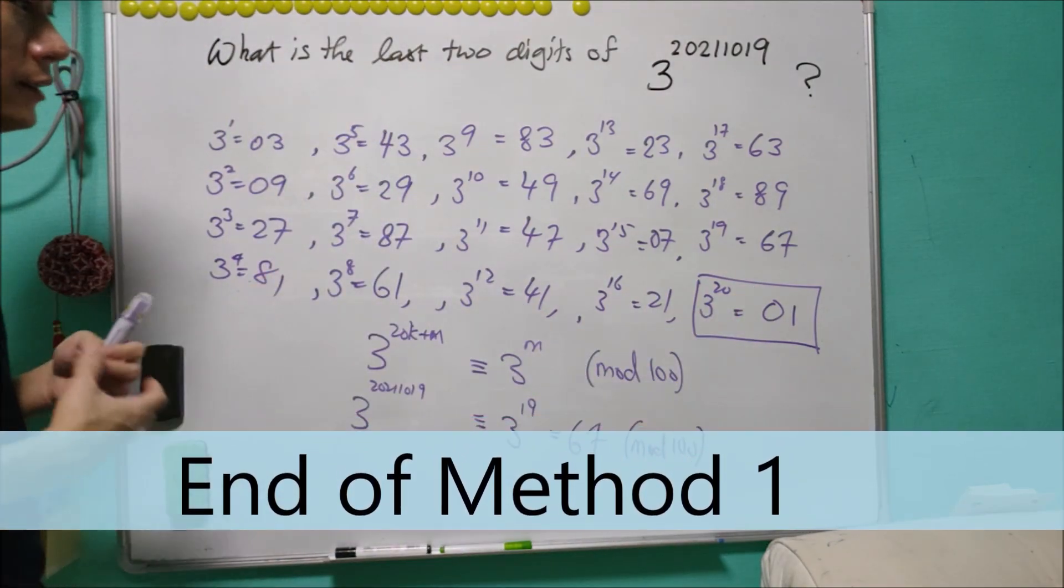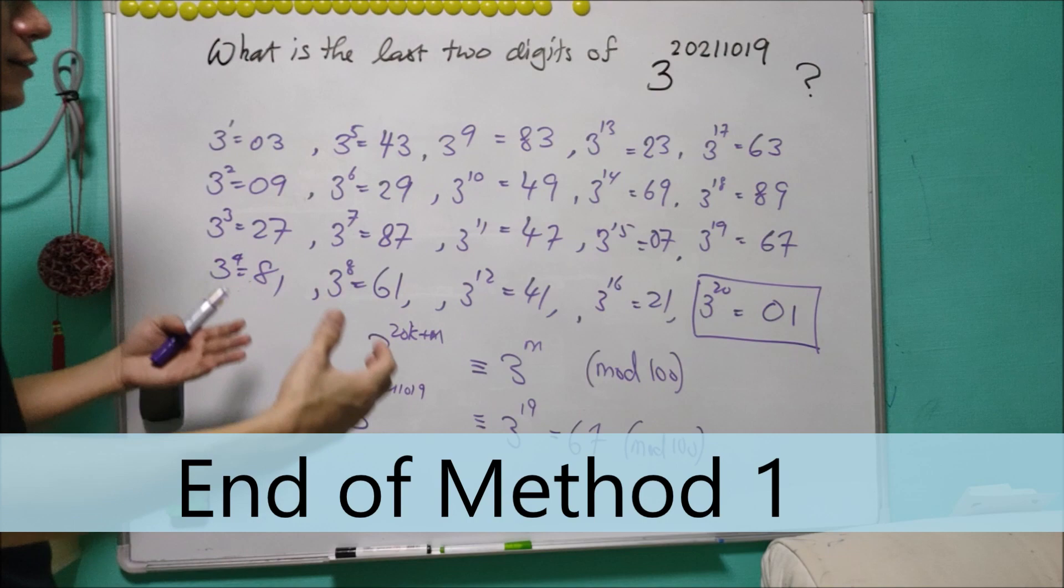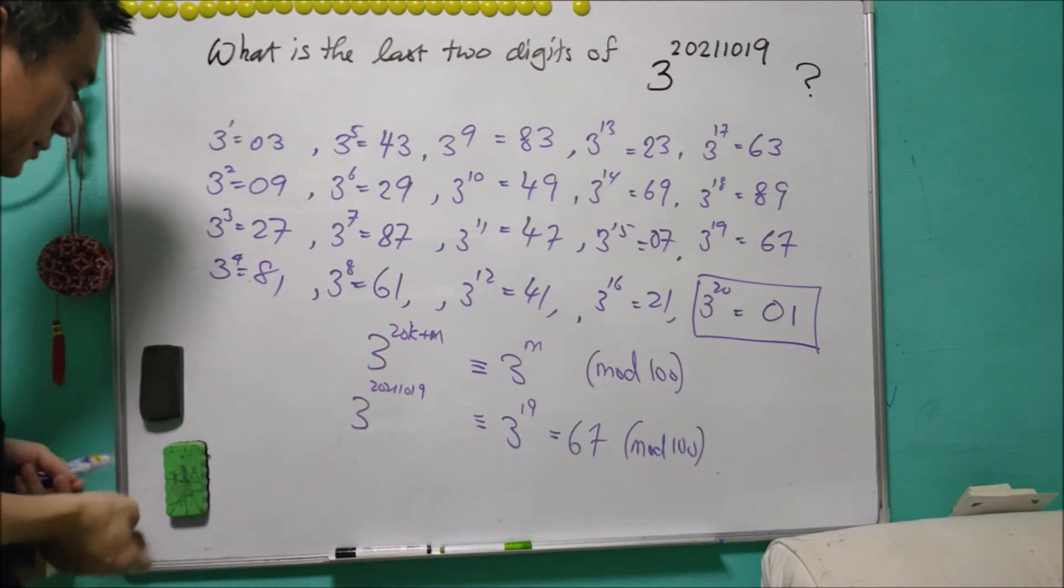By listing up and seeing when we can get the repeated number, it's a usual technique that you use when first starting this kind of question. Now we are going to look at a different method.